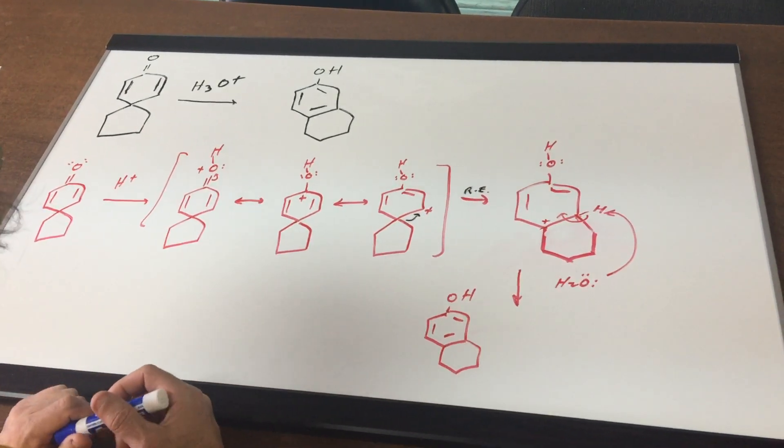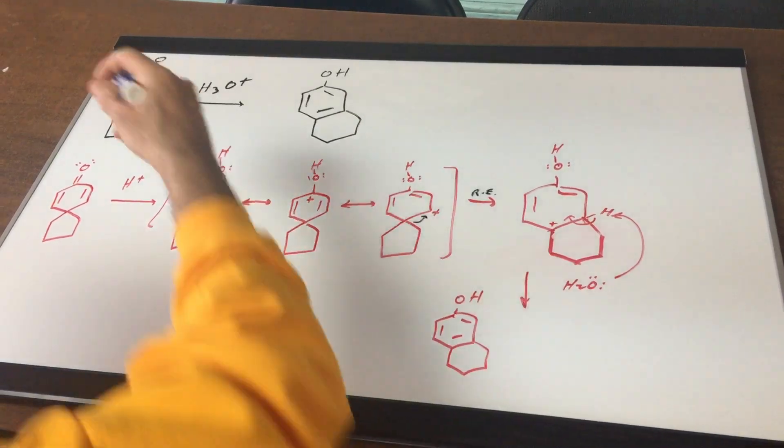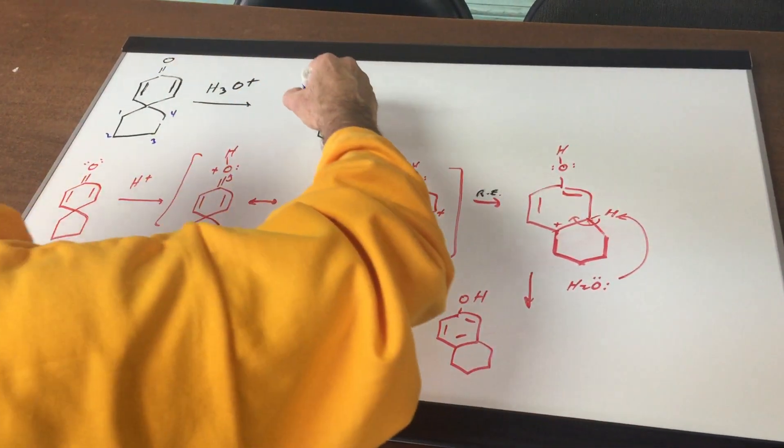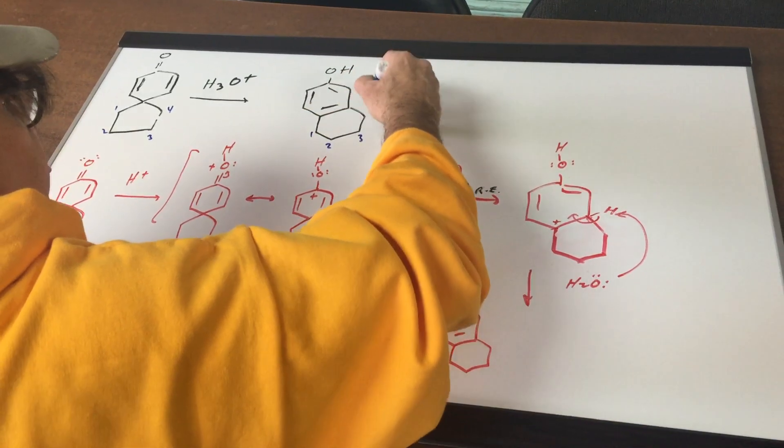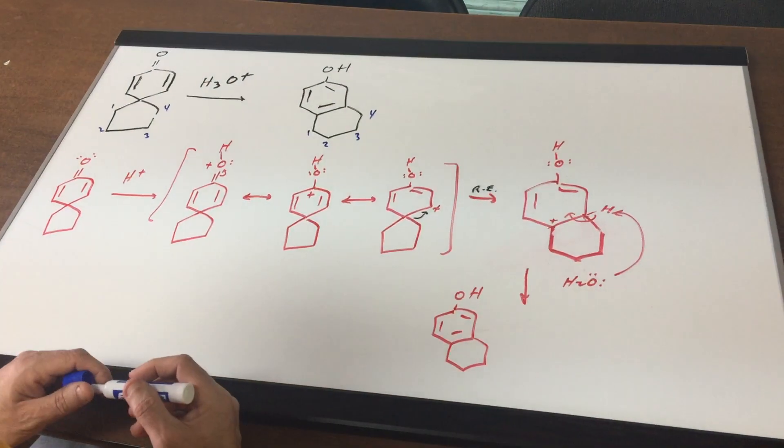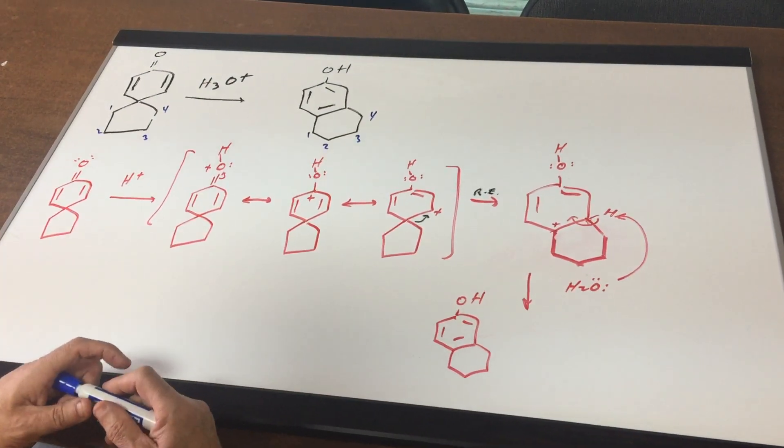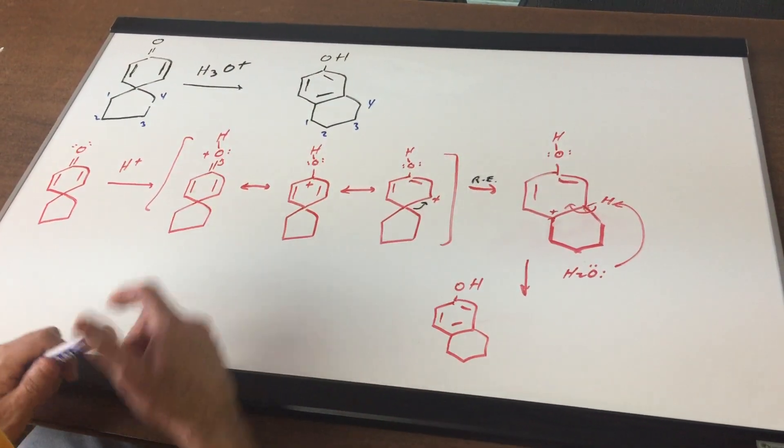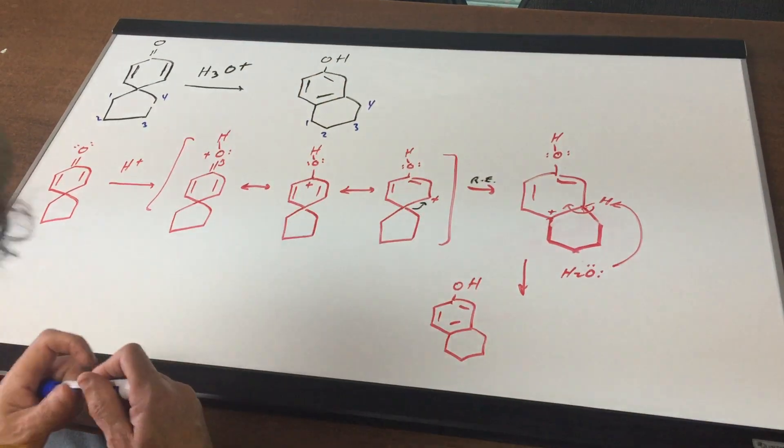Well obviously there had to be some type of rearrangement, so if I just number this as 1, 2, 3, 4 and you can see 1, 2, 3, 4. So as you can see it looks to me that this carbon number 4 has somehow migrated over to this position on the benzene ring.